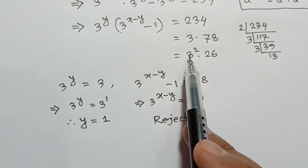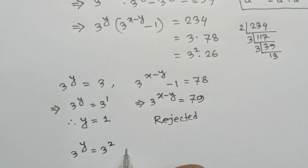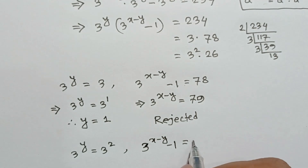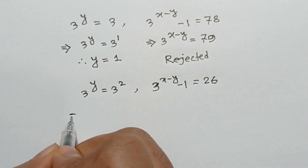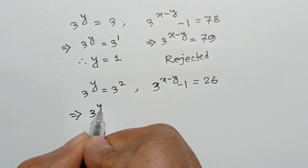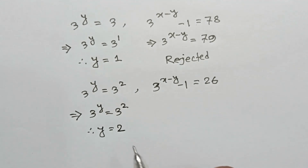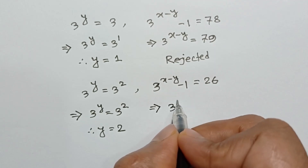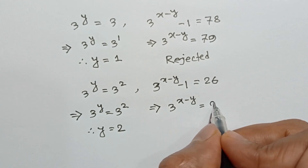Again, we can write 3 to the power y is equal to 3 squared. So 3 to the power y equals 3 squared, and 3 to the power x minus y minus 1 is equal to 26. Since 3 to the power y equals 3 squared, y is equal to 2. From this equation, 3 to the power x minus y equals 26 plus 1, which is equal to 27.